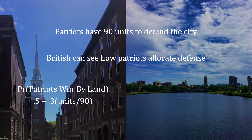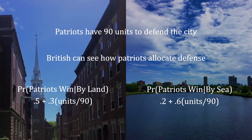Specifically, the probability that the Patriots win given that the British attack by land is 0.5 plus 0.3 times the number of units divided by 90. Meanwhile, the probability that the Patriots win if the British attack by sea is 0.2 plus 0.6 times the number of units divided by 90.